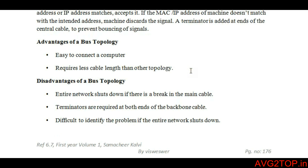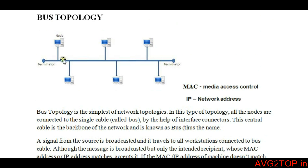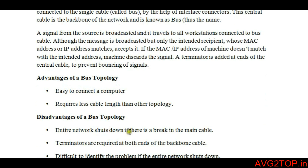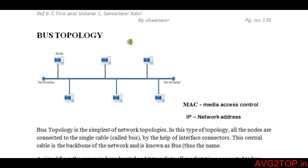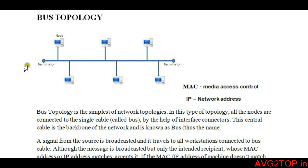Some advantages are that it is very easy to connect with a single cable. The disadvantage is that the entire network gets shut down if there is any break in the main cable — it will not be able to transmit data. Terminators at both ends are required to boost the signal. Also, it is difficult to identify problems if the entire network shuts down, meaning it is very hard to know where the exact issue occurred. This is all about bus topology.